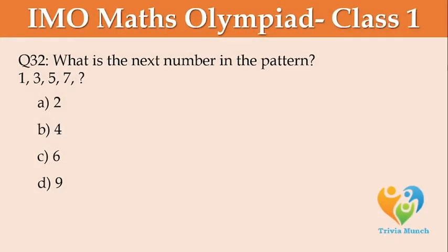What is the next number in the pattern? 1, 3, 5, 7, ___. A: 2, B: 4, C: 6, D: 9.